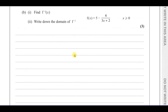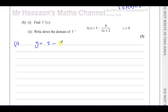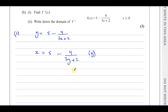For part B, we need to find f⁻¹(x), the inverse of the function. One common mistake noted in the examiner's report is confusing this with the differential — people start differentiating, which is wrong. The differential is f'(x); f⁻¹(x) is the inverse. To find the inverse, we swap x and y, then rearrange. Starting with y = 5 − 4/(3x + 2), we swap to get x = 5 − 4/(3y + 2).